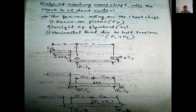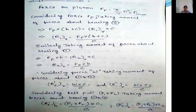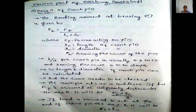In this overhang crankshaft, there are three types of forces: force on piston, weight of flywheel, and horizontal load due to belt deflection — nothing but P1 plus P2. If you see in these images, the reactions in the chart depend upon the crankshaft. After that, we find the forces and reactions according to the crankshaft, including the vertical force, vertical reaction, and horizontal reaction.